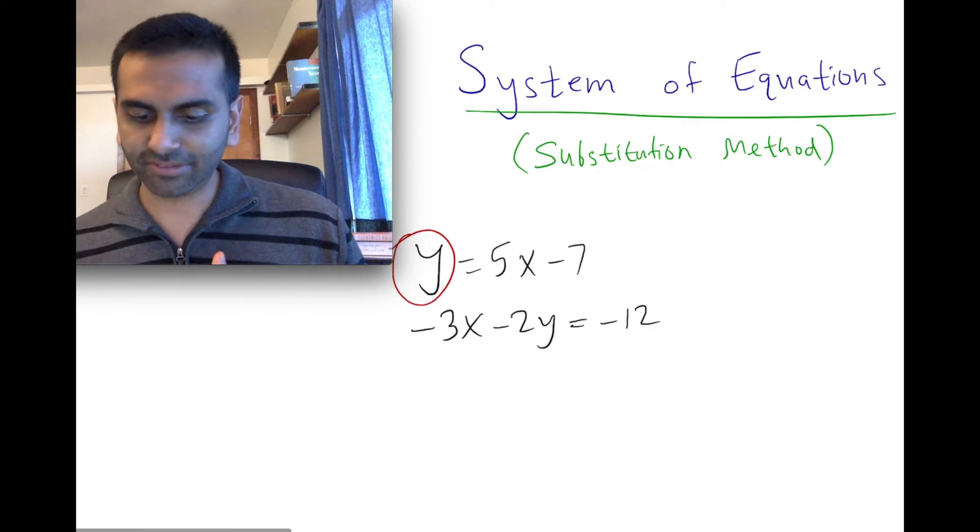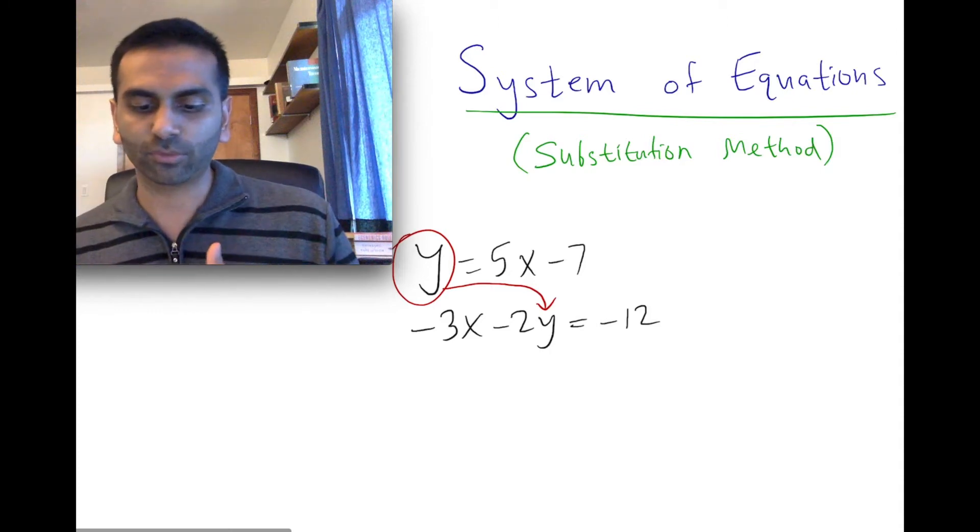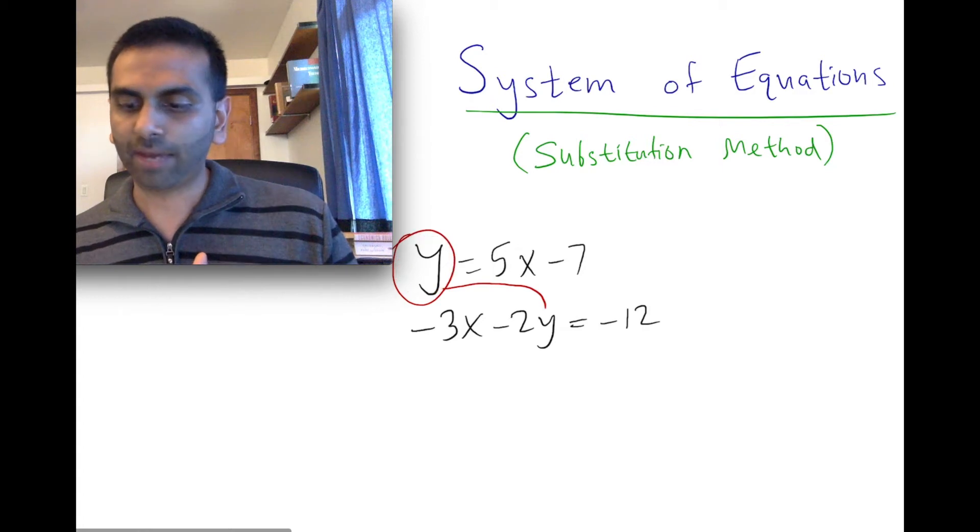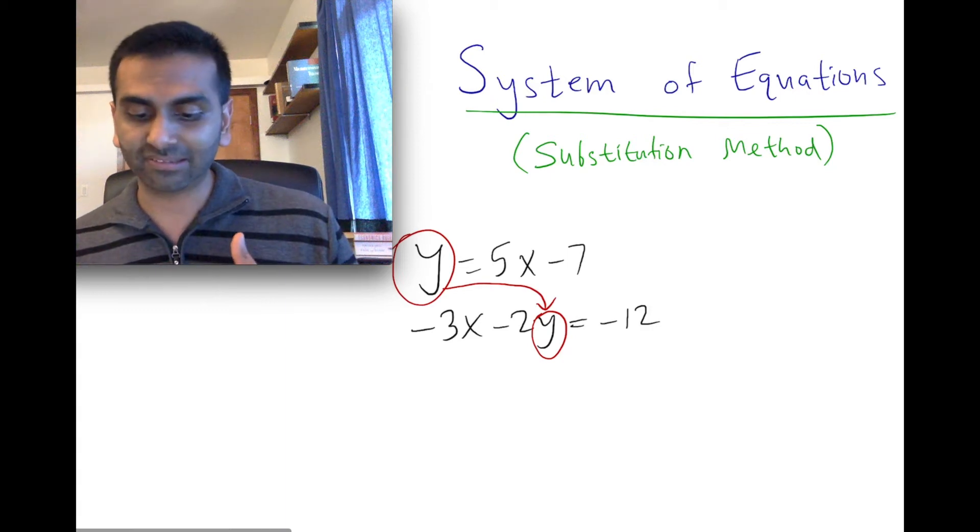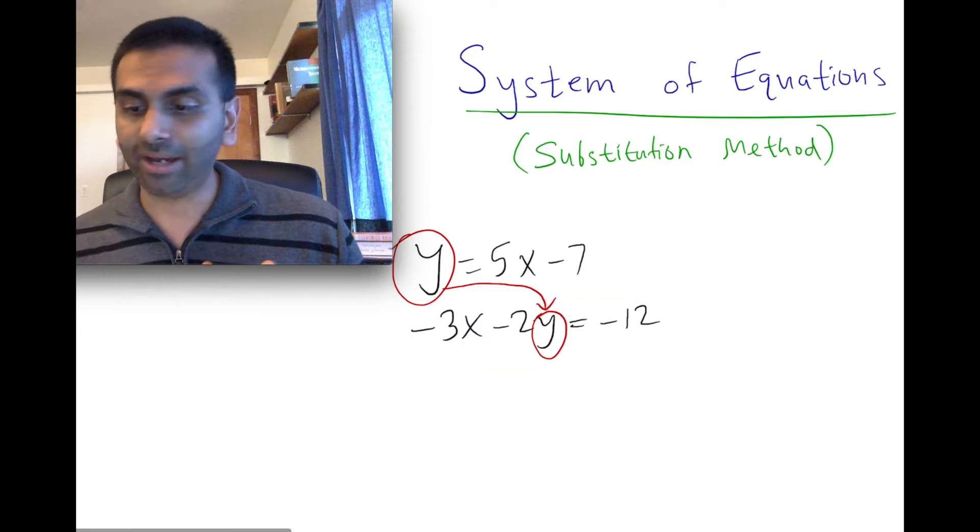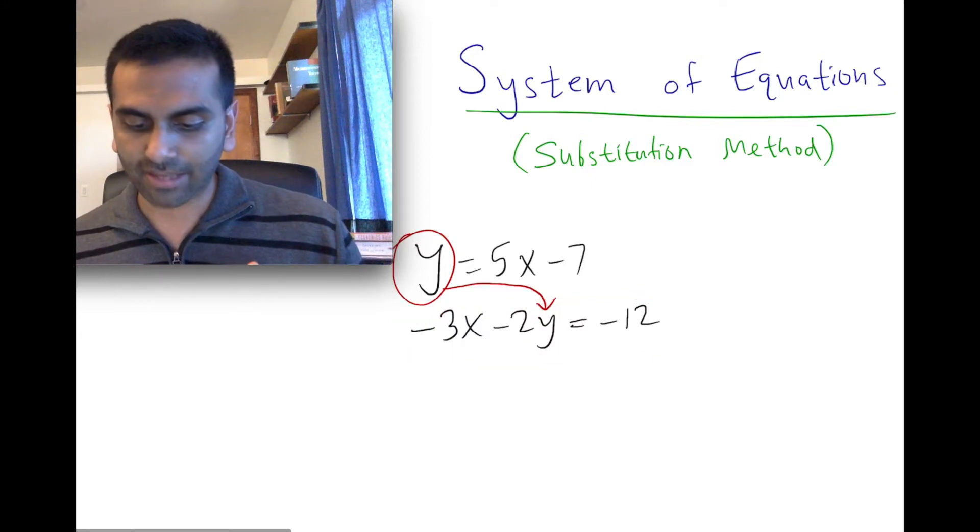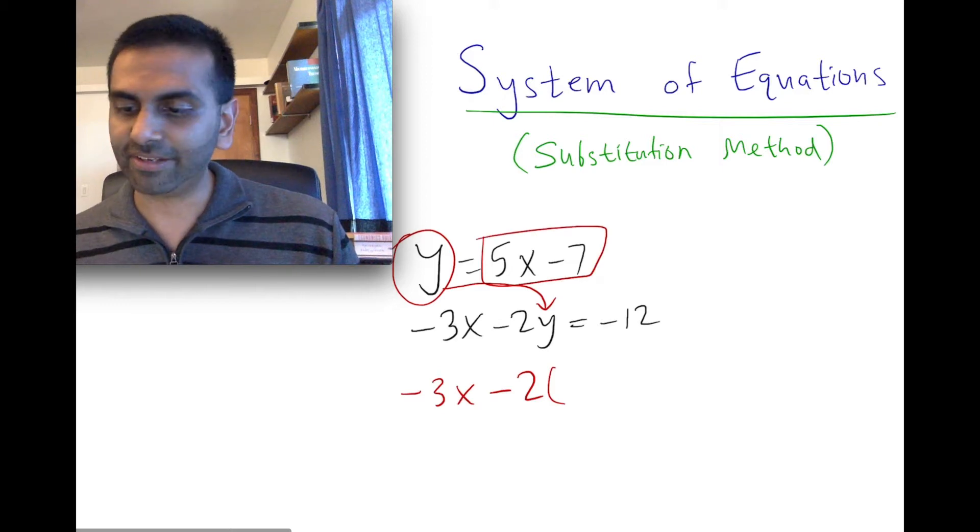You substitute this y into the other equation. So that's important. You have to use both equations, right? So we're using this y from this equation, seeing what that's equal to, and we're basically swapping out the y in this equation. So here's what I'm going to do. I'm basically going to write out the second equation with the y substituted. So that's going to be -3x - 2, not y, but I'm going to replace y. What's y equal to? 5x - 7.